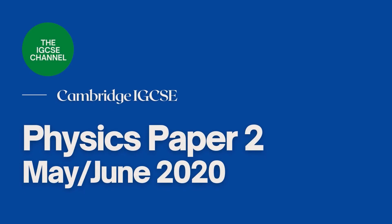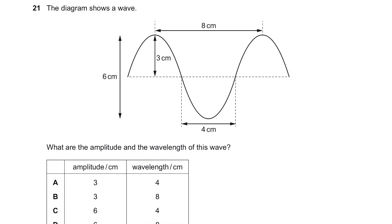Hey guys, this is part 2 of Cambridge IGCSE Physics Major 2020 Paper 23. The diagram shows a wave. What are the amplitude and the wavelength of this wave?